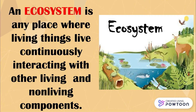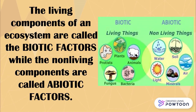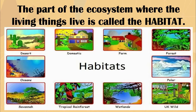An ecosystem is any place where living things live, continuously interacting with other living and non-living components. The living components of an ecosystem are called the biotic factors, while the non-living components are called abiotic factors. The part of the ecosystem where the living things live is called the habitat.